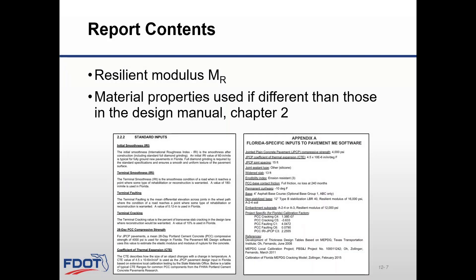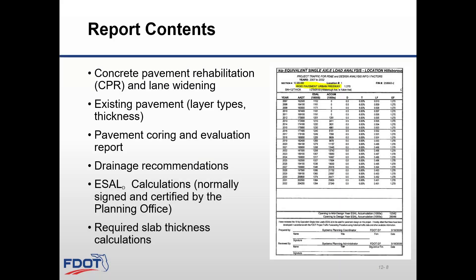For construction reports, the report needs to include resilient modulus data. It should also include important standard inputs already discussed in Module 3. If any material properties proposed to be used are different than those in the design manual, then detailed design notes will need to address the need for those changes. ESAL D calculations are important as well — this information is usually provided and certified by the planning office. Make sure the data has been prepared for rigid pavements.